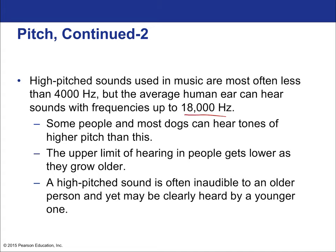Some people and most dogs can hear tones of higher pitch than this. The upper limit of hearing in people gets lower as they grow older — a high pitch sound is often inaudible to older people but clearly heard by a younger one. Through most of your adult life you're around 18,000 hertz, but getting into geriatrics the frequency starts to fall off, and someone in their 80s or 90s might only be able to hear up to 14,000 or 15,000 hertz.